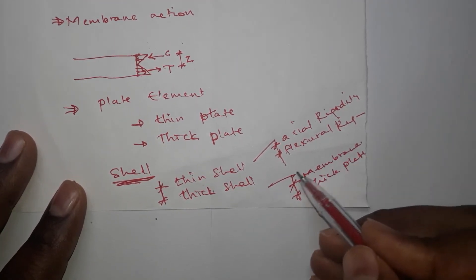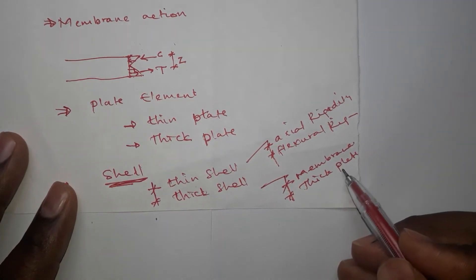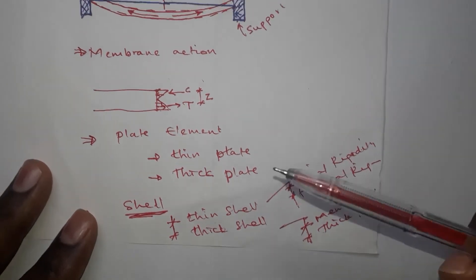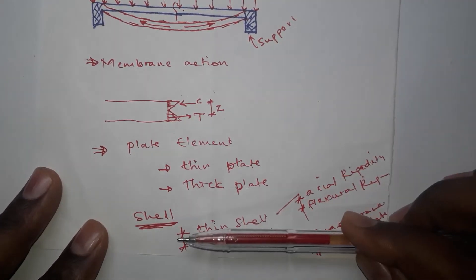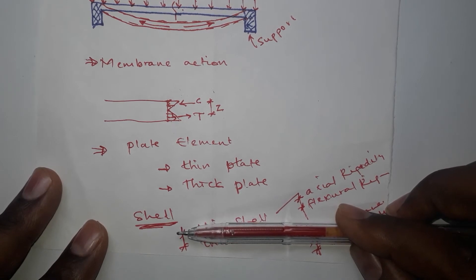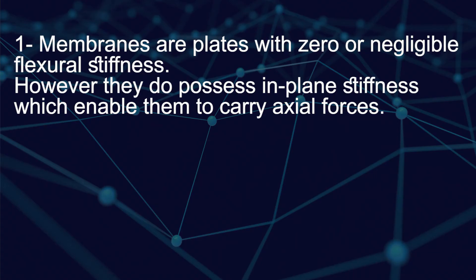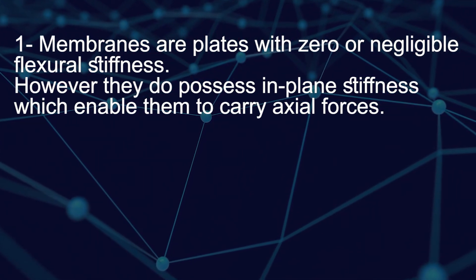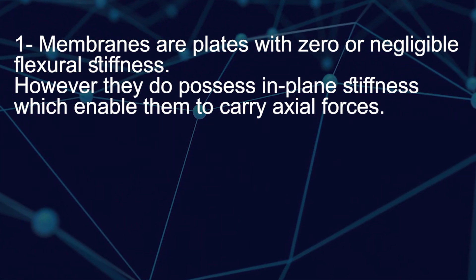It means that for the thick shell, both the flexural stiffness of the element and the axial stiffness will be considered. So this is the basic difference between the membrane, the plate, and the shell elements in SAP and other finite element packages. In summary, membrane elements are plates with zero or negligible flexural stiffness; however, they do possess an in-plane stiffness which enables them to carry axial forces.